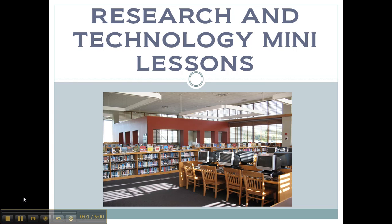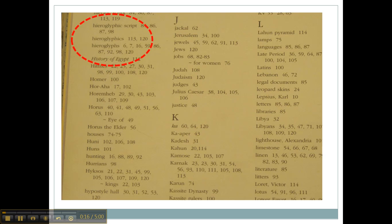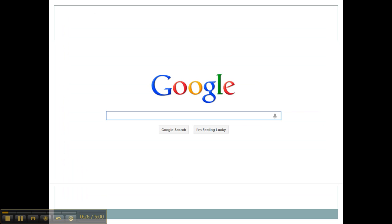Welcome to research and technology mini-lessons. Today we're going to talk about what a keyword is. Keywords are words that you use to find more information. It can be in an index of a book, looking up information in either a table of contents or an index to find where information in the book is using your keyword. But it also could be in a search engine or a database.